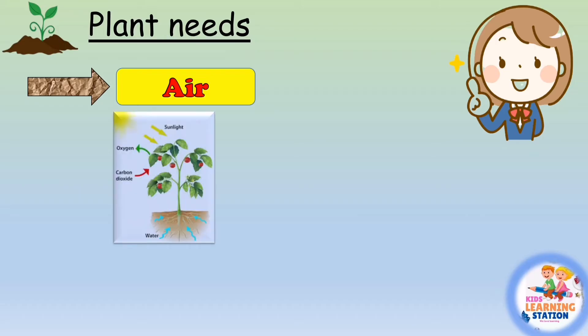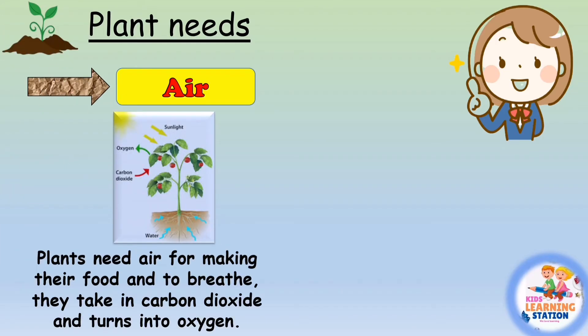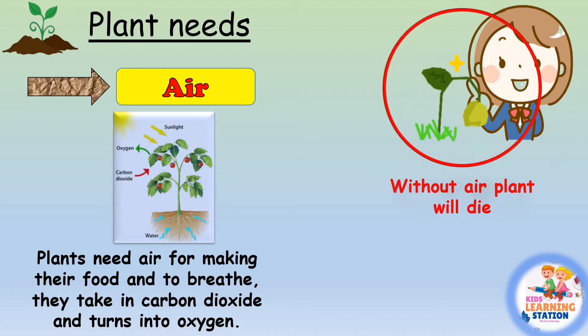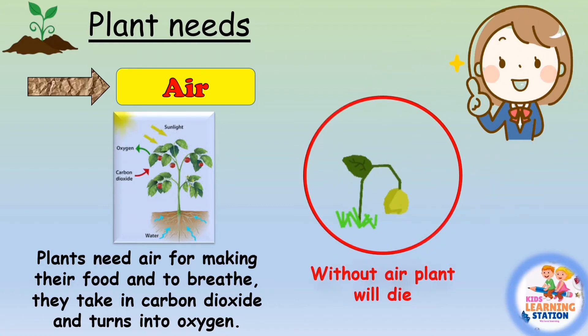Air: it is very important for plants. Plants need air for making their food and to breathe, just like us. Plants take in carbon dioxide and turn it into oxygen. Without air, a plant will die.